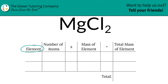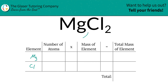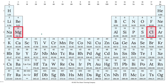So the first thing I'm going to do is write the elements I see in the compound. So we've got magnesium, we've got chlorine. Next is to identify the number of atoms — that's where the subscripts come into play. If you don't see a subscript down there, just put in a 1. So there's 1 magnesium, 2 chlorine.